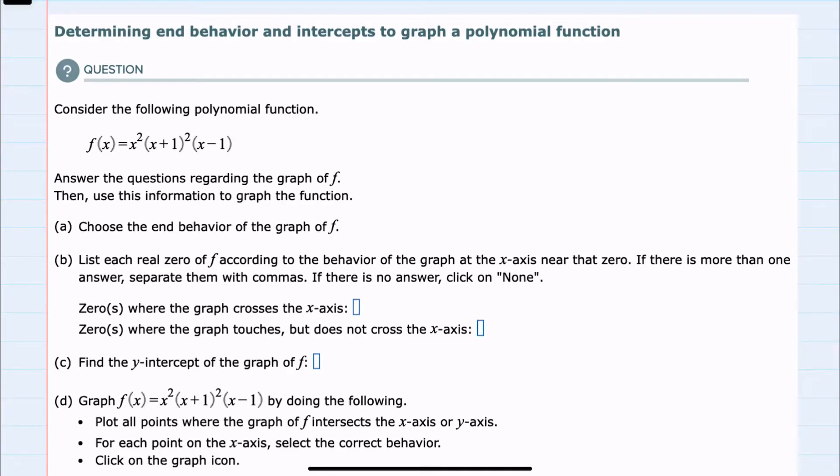In this video, I'll be helping you with the Alex problem type called determining end behavior and intercepts to graph a polynomial function. We're given the polynomial function f of x, and before graphing we're asked a few questions.